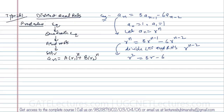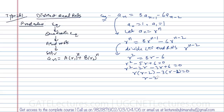Rearranging: r² - 5r + 6 = 0. Factoring: r² - 2r - 3r + 6 = 0, which gives (r - 2)(r - 3) = 0. Therefore the roots are r1 = 2 and r2 = 3 — both distinct and real. Sometimes roots can repeat, which is our second case.